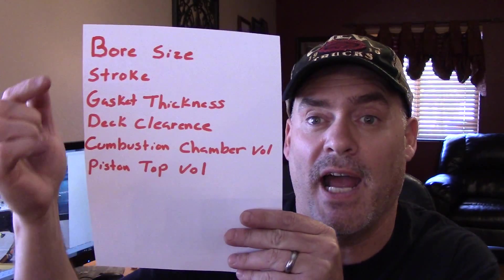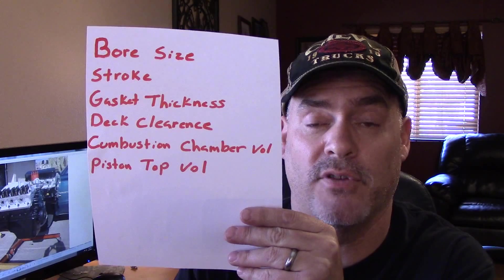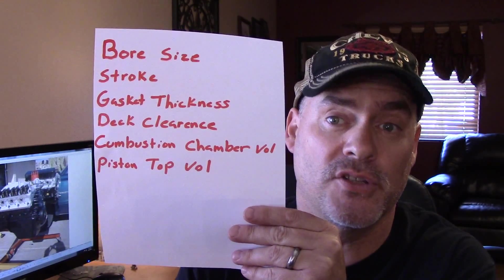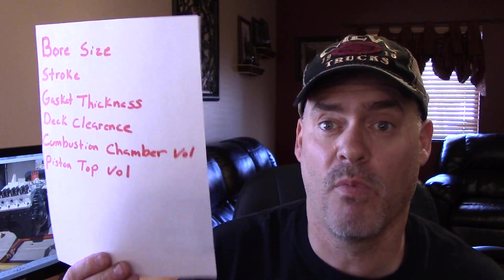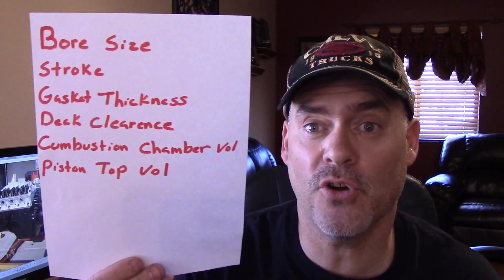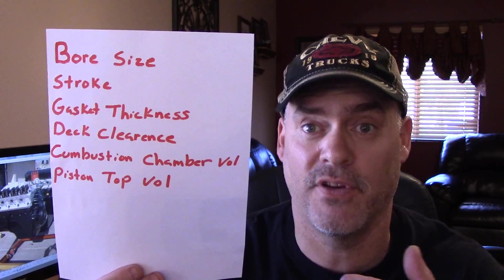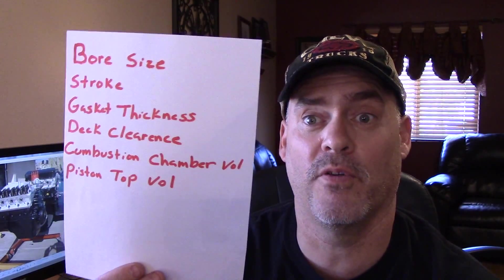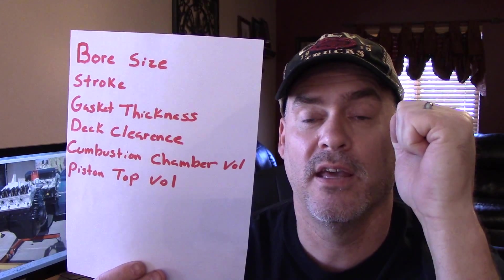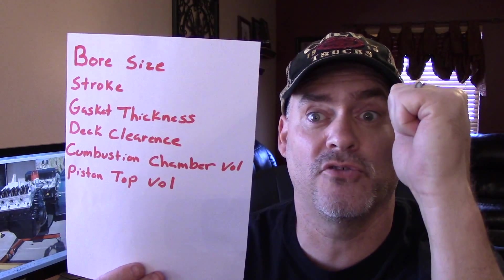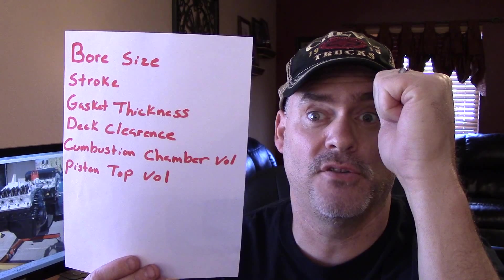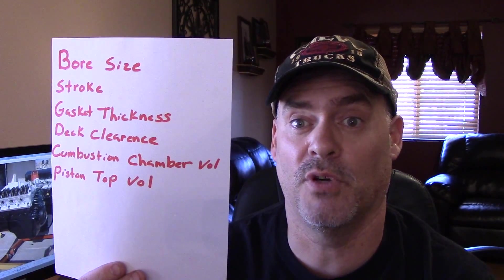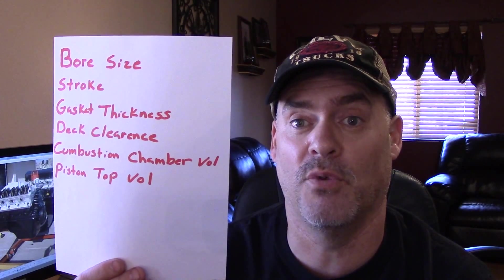Number one, you need to know the bore size of the engine. The second thing is the stroke. The stroke of the engine is how far the piston travels from top to bottom or bottom to top — that distance is the stroke. When the piston leaves top dead center and travels all the way to the bottom, how far was that travel? That's the stroke. One stroke is how far the piston travels in one direction.